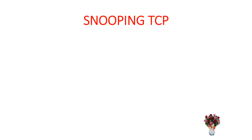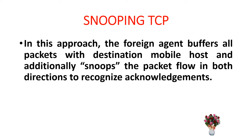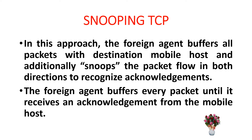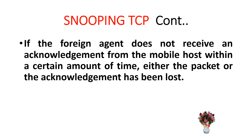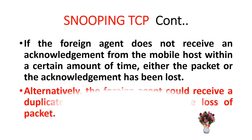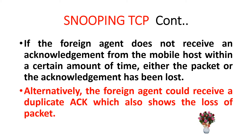In the snooping TCP approach, the foreign agent buffers all packets with destination mobile host and additionally snoops the packet flow in both directions to recognize acknowledgements. If the foreign agent does not receive an acknowledgement from the mobile host within a certain amount of time, either the packet or the acknowledgement has been lost. Alternatively, the foreign agent could receive a duplicate ACK, which also shows the loss of a packet.